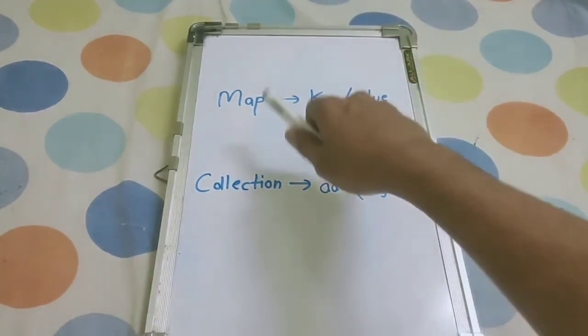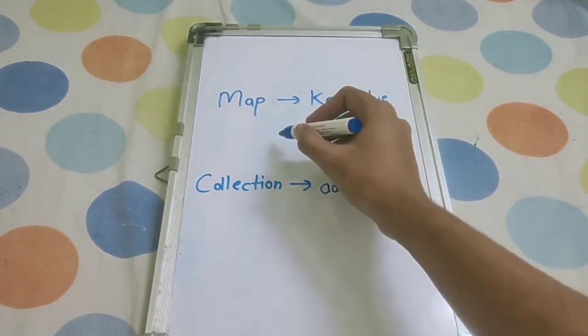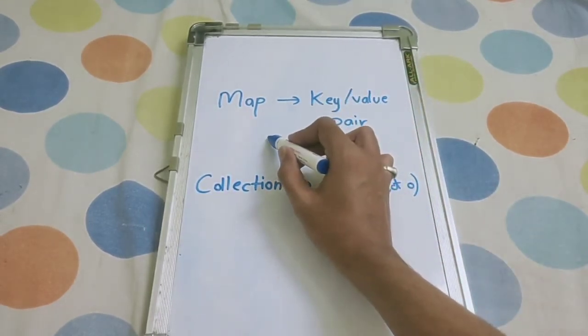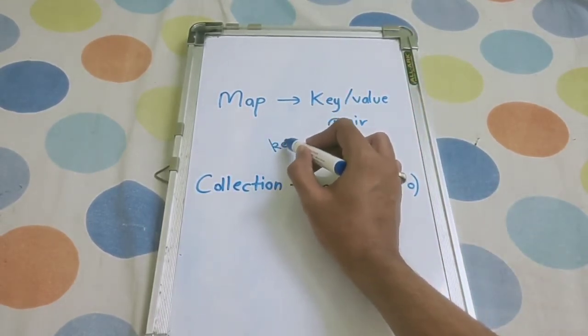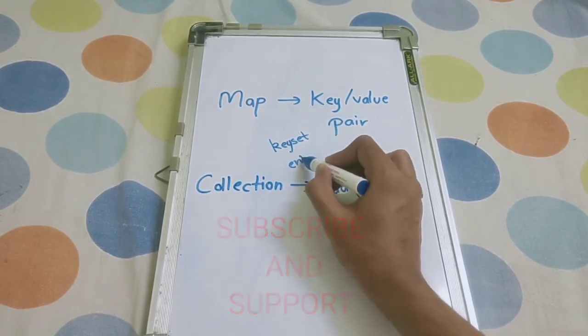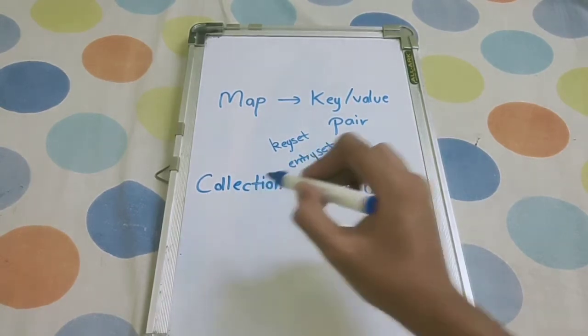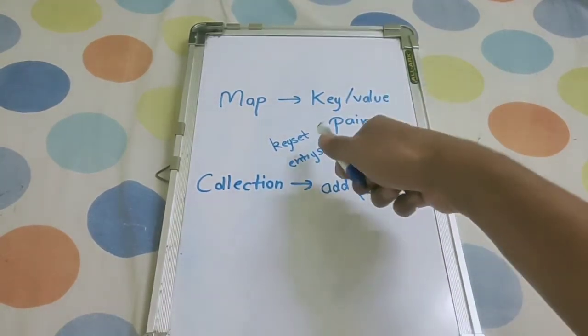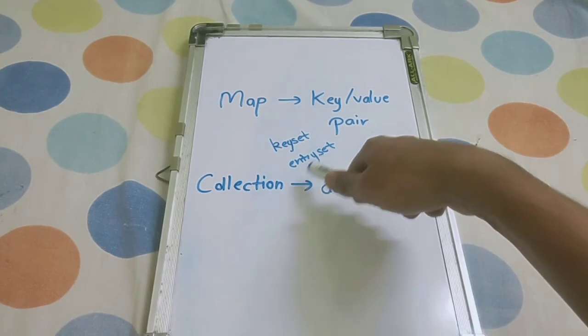Map only depends on key-value and it also has methods or concepts like key set and entry set, which are not used in Collection. As these are incompatible with each other, it is not possible to keep them in the Collection hierarchy.